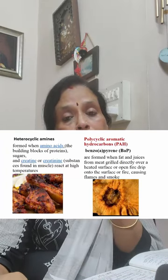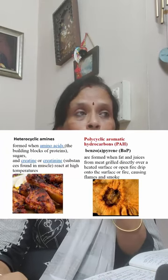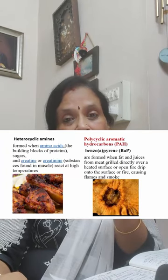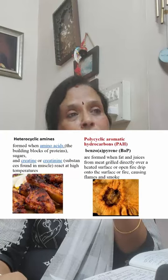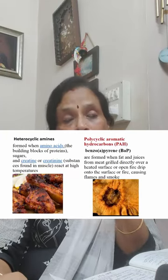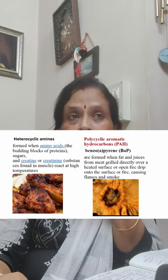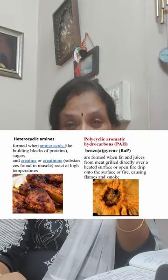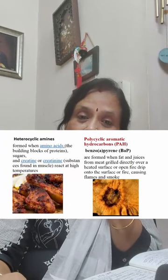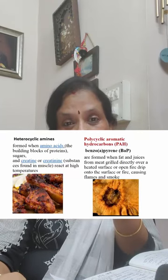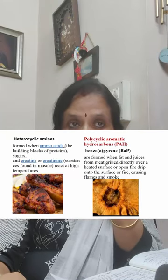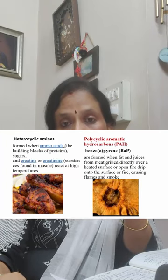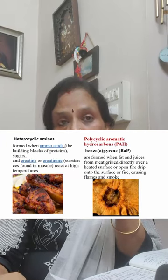Heterocyclic amines are formed when the amino acids — the building blocks of proteins in meat — and sugars and creatinine substances found in muscle react at high temperatures. Polycyclic aromatic hydrocarbons form when fat and juices from meat drip onto a heated surface or open fire, causing flames and smoke. What does this cause? Carcinoma of the stomach. You can see the picture: smoked meat on one side and carcinoma of the stomach on the other.